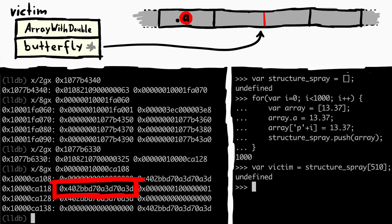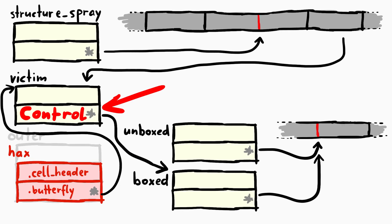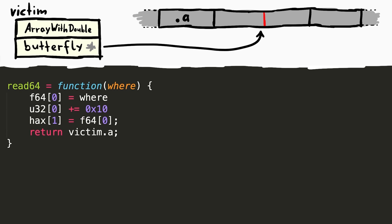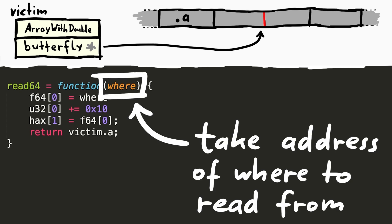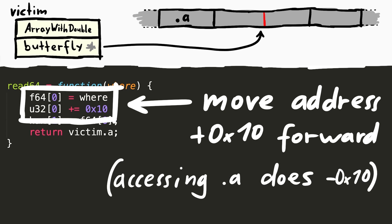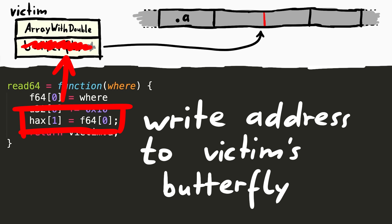Do you see how you can turn that into an arbitrary read and write? If you control the address of the butterfly, you can point the butterfly anywhere in memory. And then the .a property allows you to access memory minus 0x10 from that butterfly address. So an arbitrary read would take an address as a double value, add 0x10 to it, because the property will make us access 0x10 subtracted from that address, and then we write that address to the butterfly of victim by assigning it to hax[1].